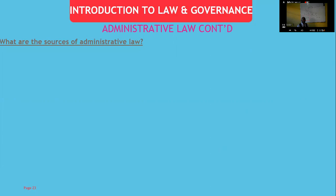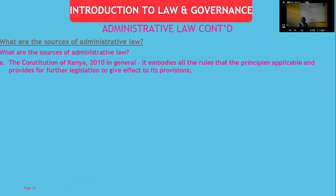Now let us look at the sources of administrative law. We have already seen one source — case law from Lamondi v. ECK. Looking at them in their hierarchy: number one is the Constitution of Kenya 2010. The constitution contains the rules and principles that are applicable, and it provides for further legislation to give effect to its provisions. Where the constitution is not an end in itself, it assigns a duty to parliament to provide further legislation to give effect to its provisions.